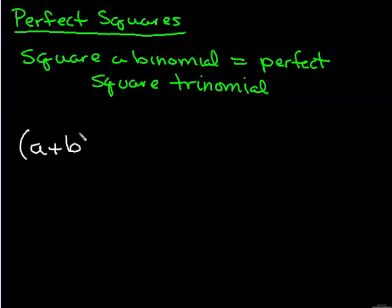If I have a binomial, a plus b squared, I square the first. I multiply the first and the second together times two, and I square the second.